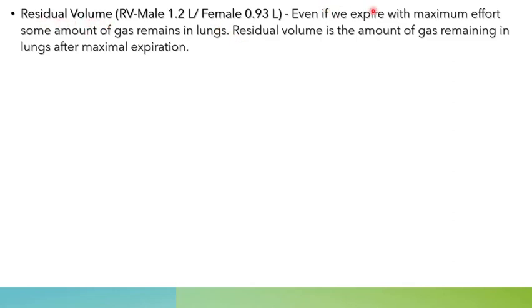If we expire with maximum effort, some amount of gas still remains in the lungs. Residual volume is the amount of gas remaining in the lungs after maximal expiration. For a normal human male, it comes around 1.2 liters, and for a normal human female, it comes around 0.93 liters.